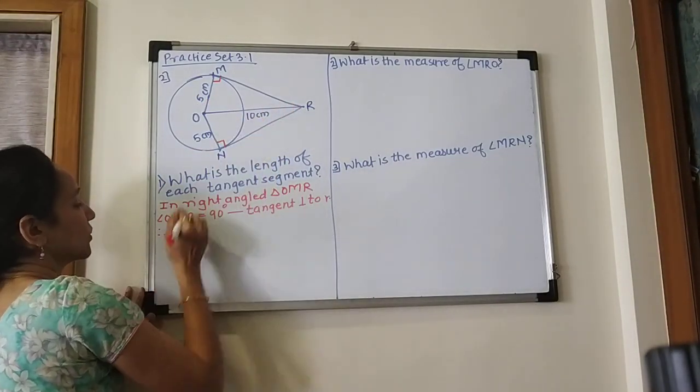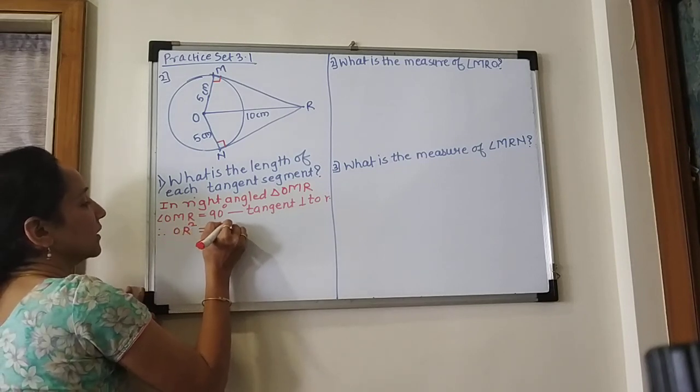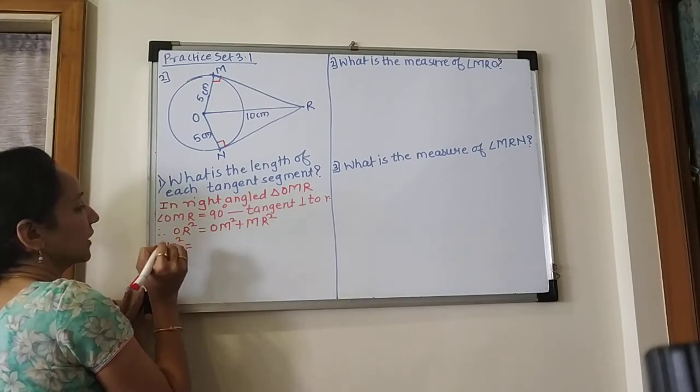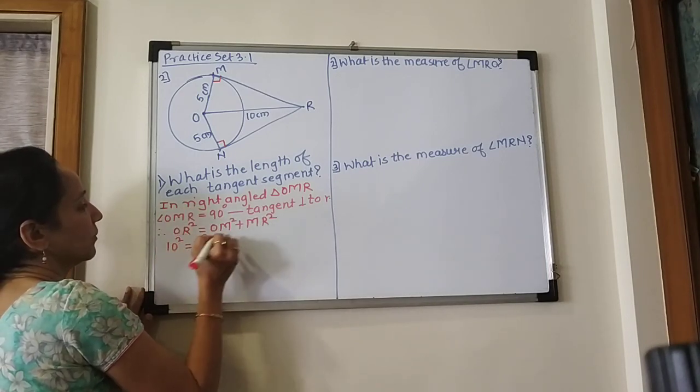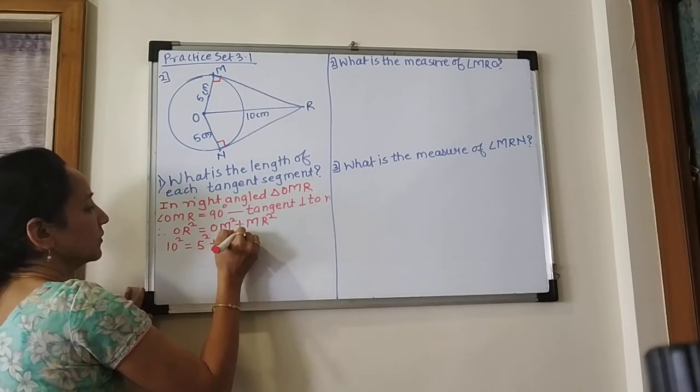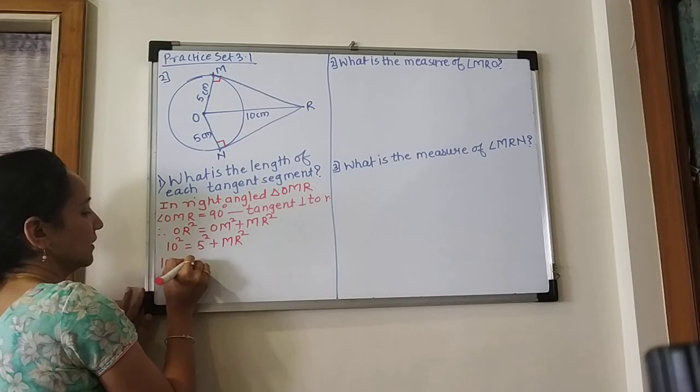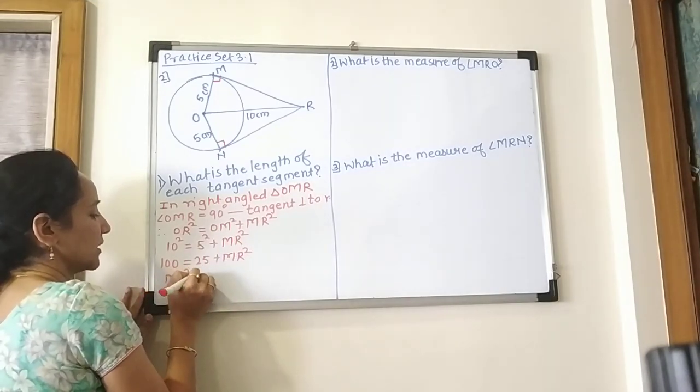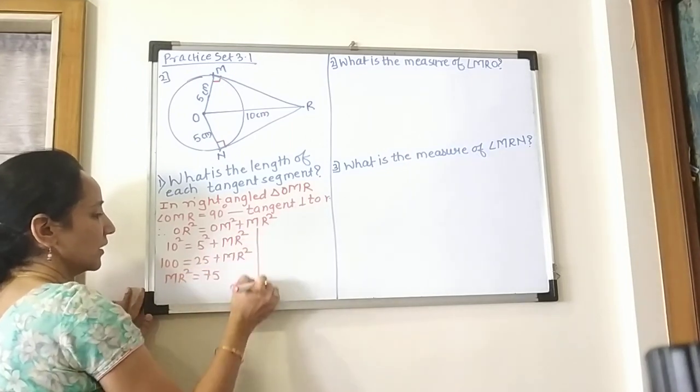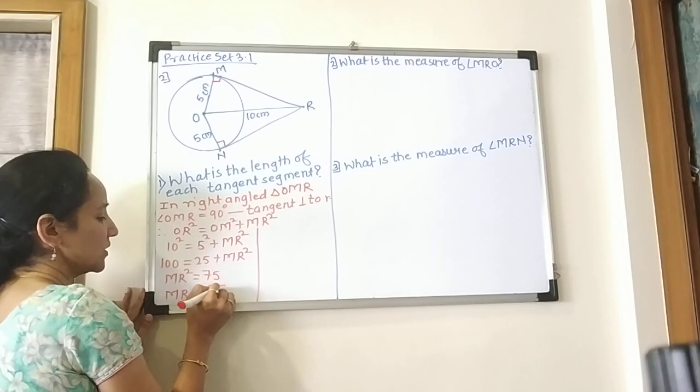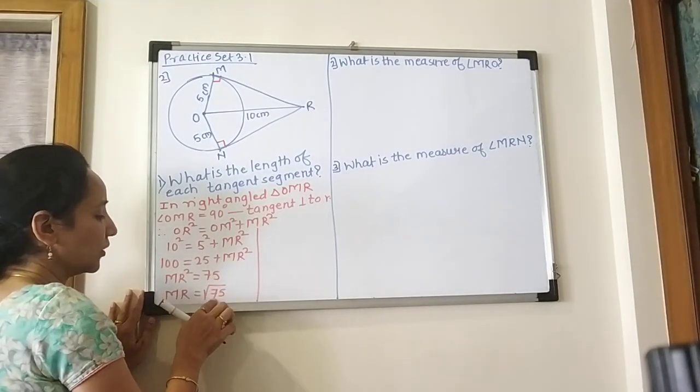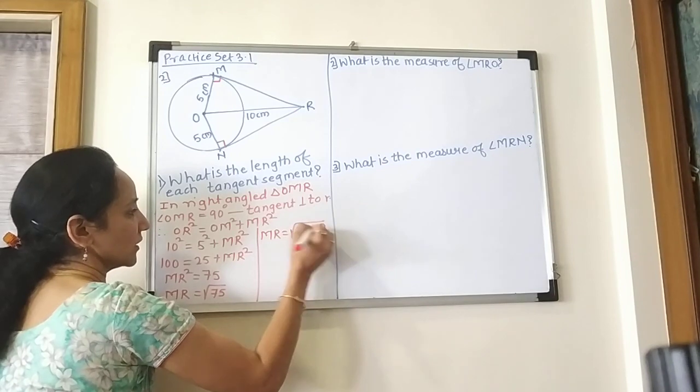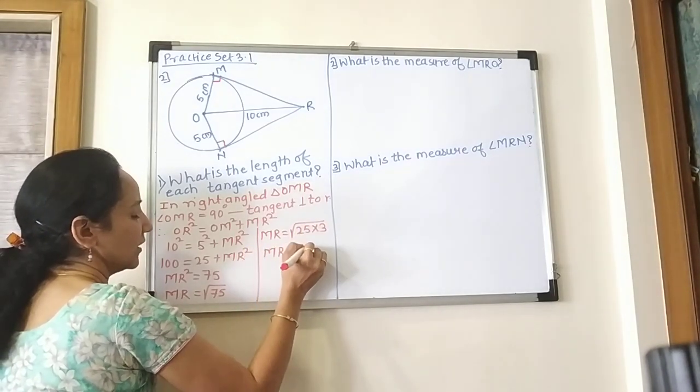Therefore, OR square is equal to OM square plus MR square. OR is 10, so 10 square is equal to OM 5 square plus MR square. 10 square is 100, 5 square is 25, plus MR square. MR square is equal to 100 minus 25 equals 75. MR is equal to root 75, so MR is equal to 5 root 3.